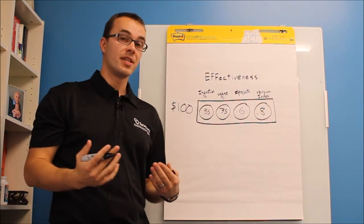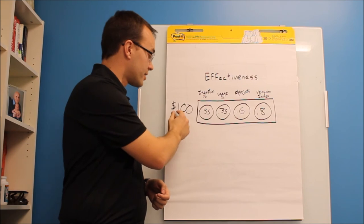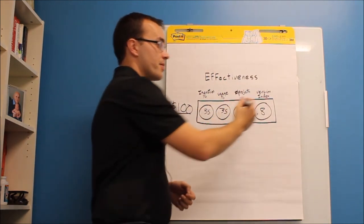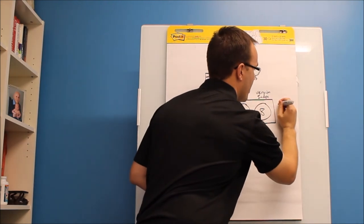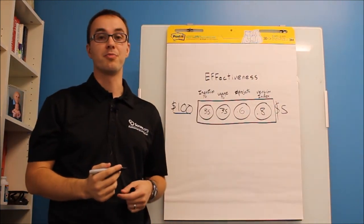So all of these things are affecting your effectiveness. If you really look at this, for every hundred dollars you put in, start multiplying this through. In this example, you're about $5 for every hundred you put in.